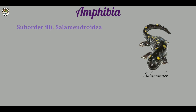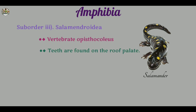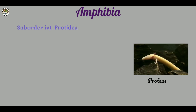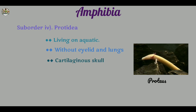Sub-order three: Salamandroidea. The vertebrates are opisthocoelous. Teeth are found on the roof of the palate. They have internal fertilization. For example, Salamander. Sub-order four: Proteida. They are aquatic. They lack eyelids and lungs. The skull is cartilaginous. For example, Proteus.